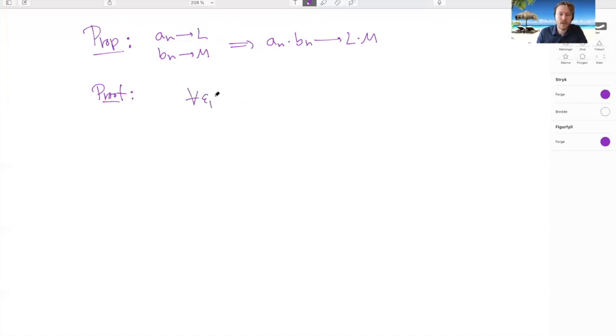We know that for every epsilon 1, there exists an n1 such that when n has passed n1, we have an minus l smaller than epsilon 1. And similarly here for the bn's, there exists an n2 such that when n has passed n2, bn minus m is smaller than epsilon 2.